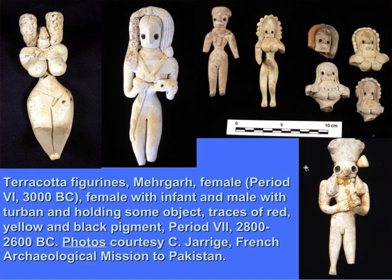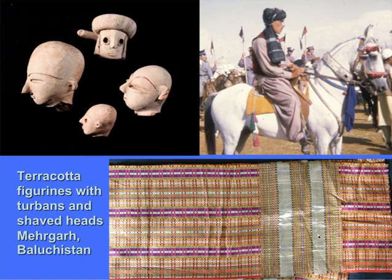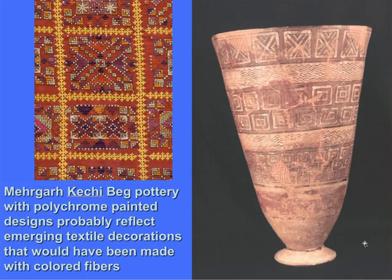We have later developments in the region. Mehrgarh and a nearby site called Nausharo have many figurines where we see people wearing textiles and fibers — turbans, sashes, necklaces that would have been threaded, and possible headdresses made of textiles. We see turbans on figurines of men with patterns, which would have been woven with different colors of fibers. Today in Pakistan, Afghan men wear silk turbans made in Multan with silver wire in them. We also have pottery from Mehrgarh with highly decorated geometric designs, which I argue would probably also have been reflected in embroideries and patterns on textiles.